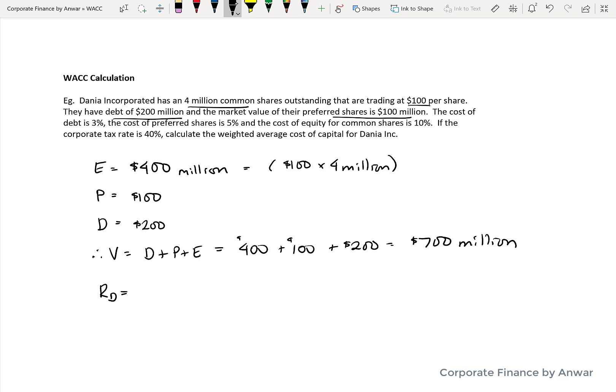And that's going to be important when we do the formula. We're given some other information we're going to need, which is that the cost of debt before tax is 3%, and the cost of preferred shares is 5%.